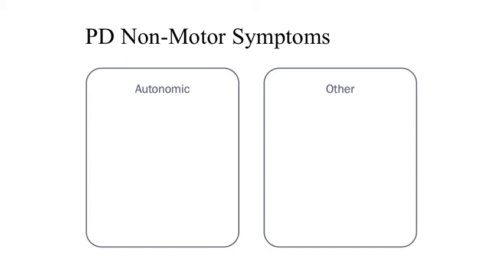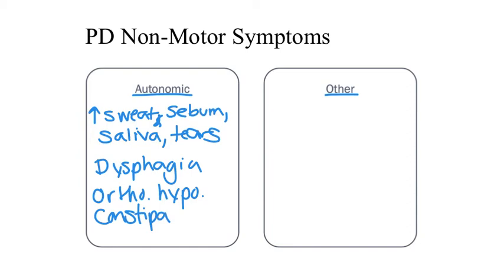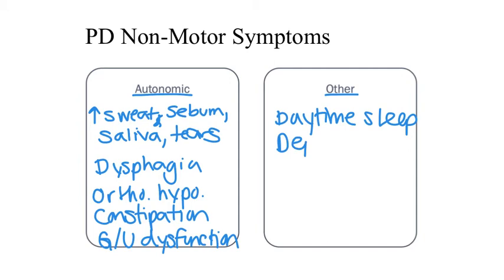In addition to the motor symptoms of Parkinson's, patients with this disorder typically experience several non-motor symptoms. These can be classified as either autonomic symptoms or other. Autonomic dysfunction includes things like increased sweating or diaphoresis, increased activity of sebaceous glands and production of sebum or skin oil, excessive salivation and lacrimation, trouble swallowing or dysphagia, the presence of orthostatic hypotension, constipation, impotence, and incontinence. Other symptoms associated with non-motor features of Parkinson's are excessive daytime sleepiness, depression, dementia, and the loss of the sense of smell or anosmia.